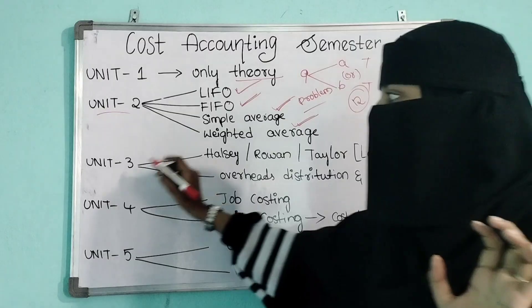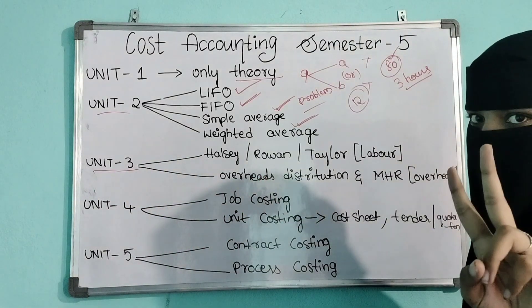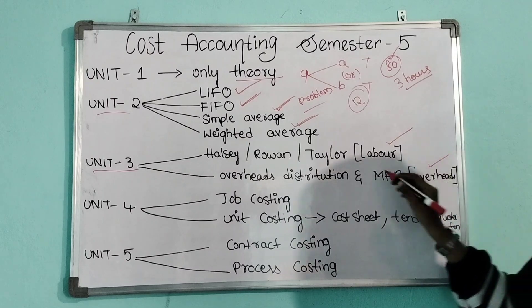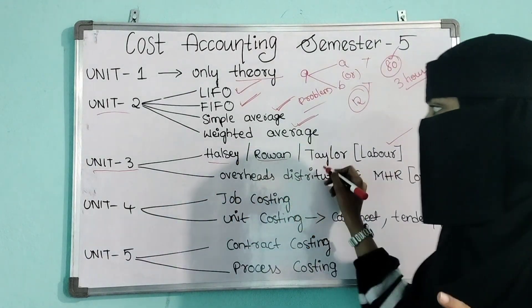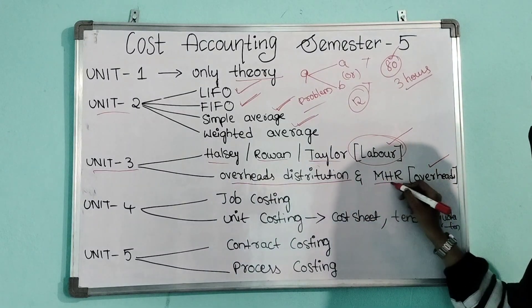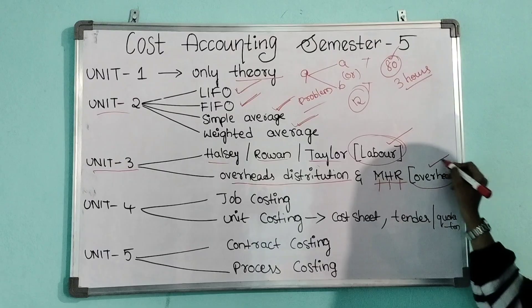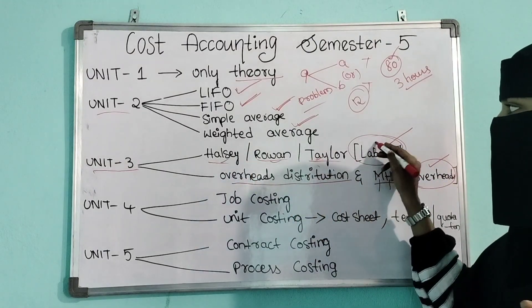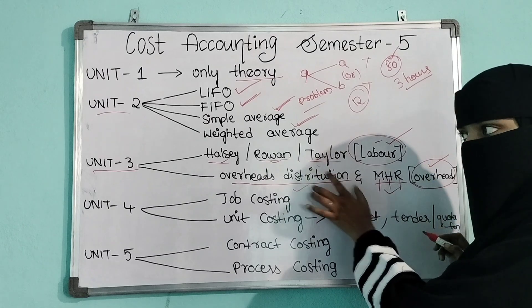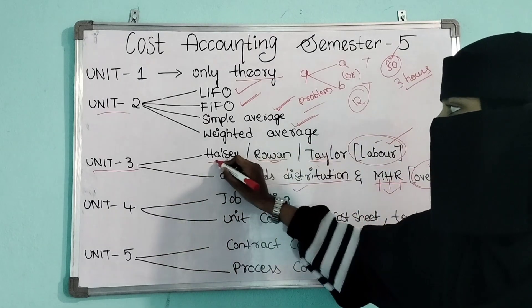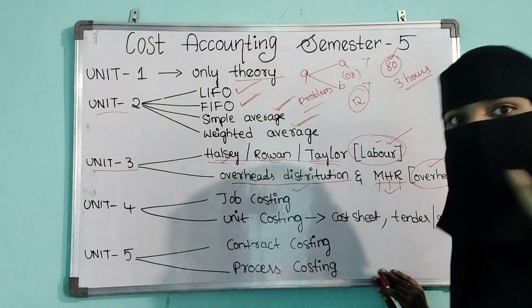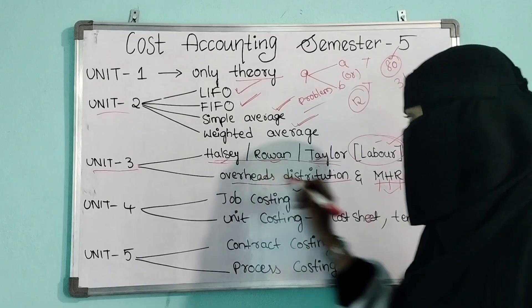Unit 3 is divided into two parts. Part 1 is Labor and Part 2 is Overheads. In Labor you will have problems from Halsey, Rowan, and Taylor methods. From Overheads you have the overheads distribution sheet and machine hour rate. My suggestion is to go with Overheads — the overheads distribution sheet and machine hour rate are very easy. Labor methods are a little more difficult, but I will upload explanations for both.